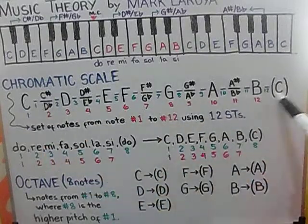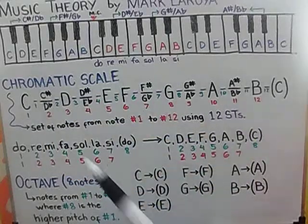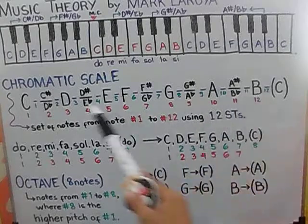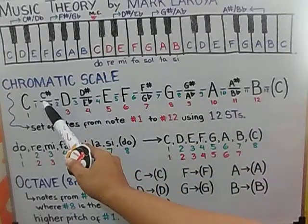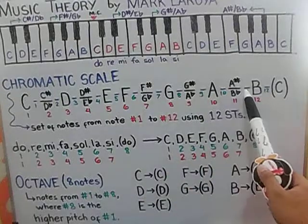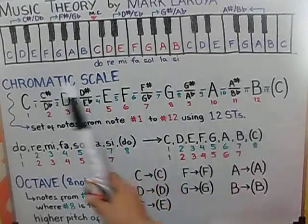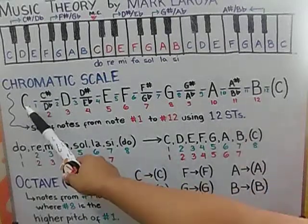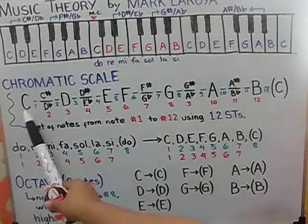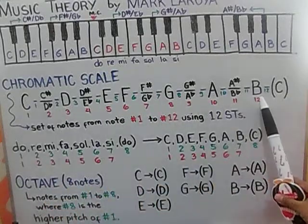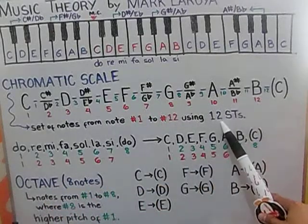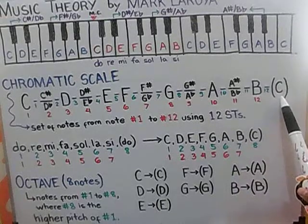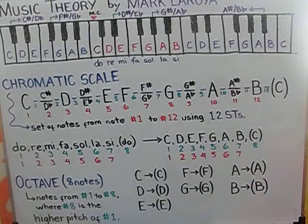But basically, we only have 12 different notes. And these are the C, D, E, F, G, A, B, and then the black keys represented by these notes. So, we are only after the 12 different notes because this C is just the higher C at this C. So, there are 12 different notes using 12 semitones for us to go back to C, to the higher pitch of C.